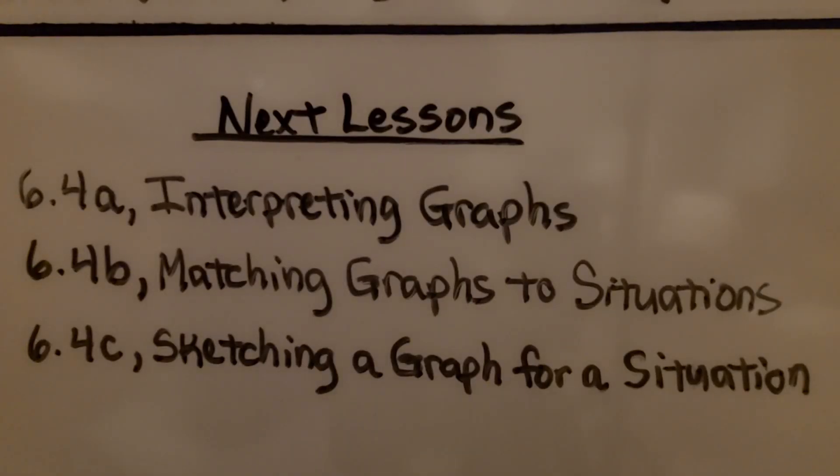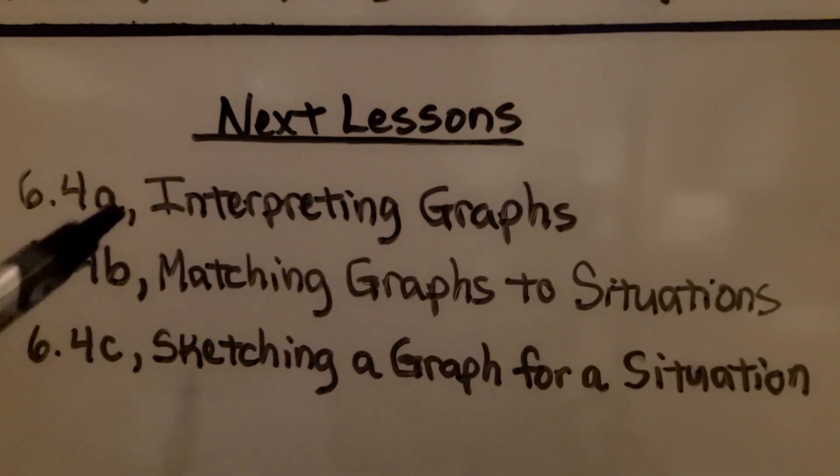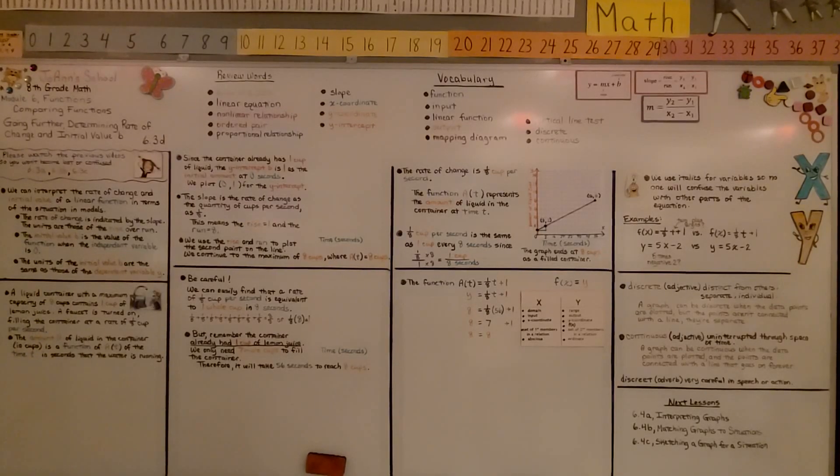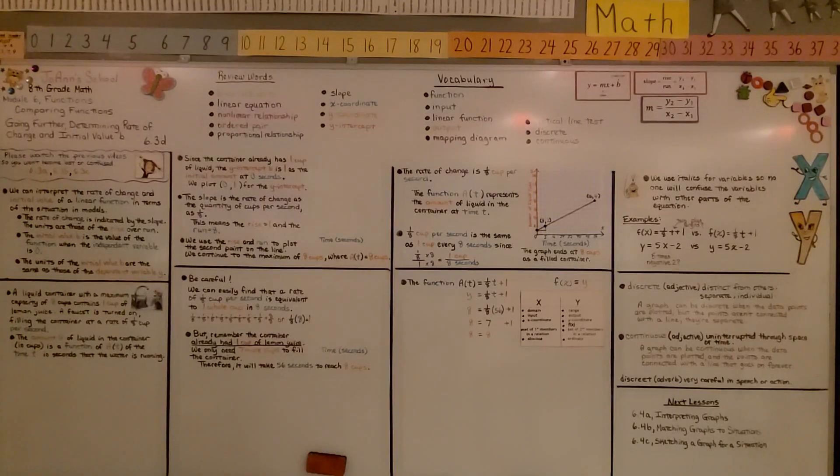We're finished with lesson 6.3, and we're moving on to 6.4. We're going to talk about interpreting graphs. So just remember, the initial value b is the y-intercept b in the equation. It's where the line crosses the y-axis. I hope you enjoy the rest of your day, and join me for 6.4. Bye!